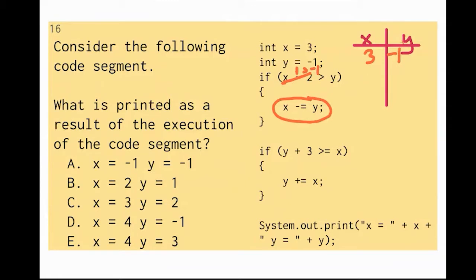It's going to subtract off what y is and then set it equal to 4. I'm sorry, set it equal to x, which is 4. So it's going to be 3 minus what the y is, which is negative 1. So now your x is 4.